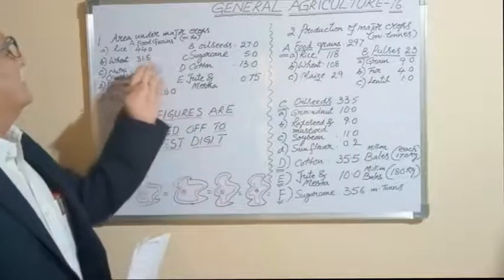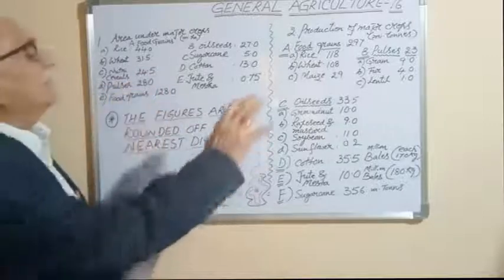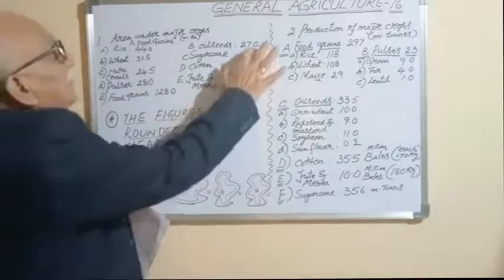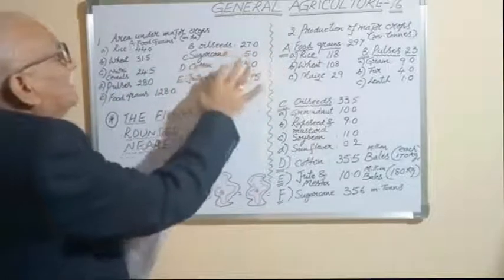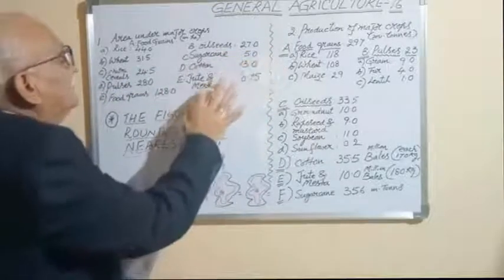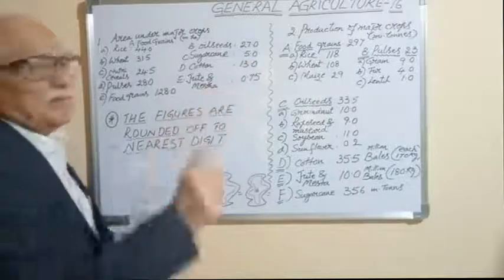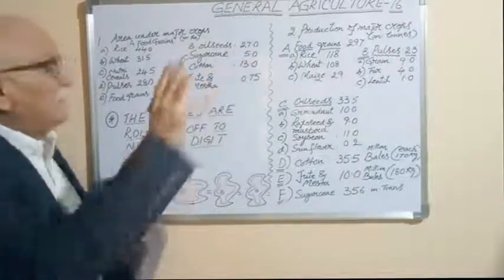As far as other crops are concerned — oilseeds: 27 million hectares, sugarcane: 5 million hectares, cotton: 13 million hectares, jute: 10 million hectares, and mustard: 0.75 million hectares.